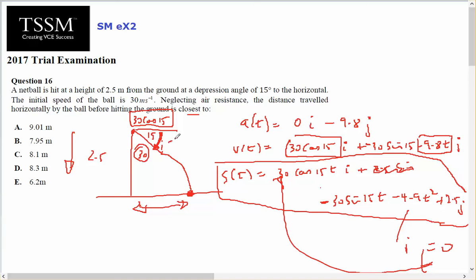Minus 30 sine of 15 degrees, which is the component in the j. So displacement then will be 30 cos 15 t.